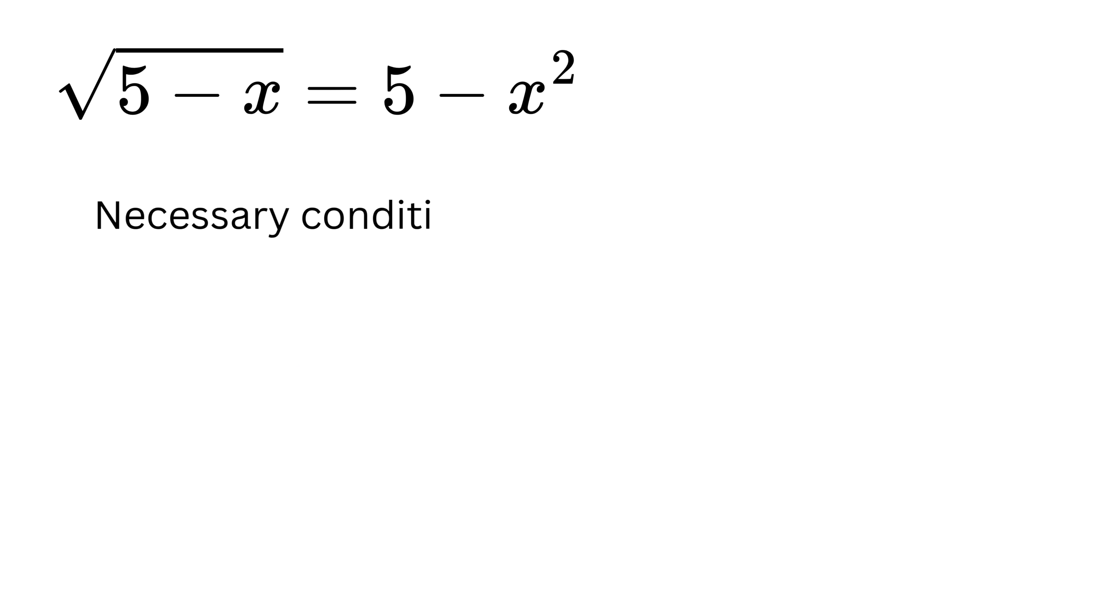First, let's establish the necessary conditions for the equation to be valid. The term inside the square root must be non-negative, and thus 5 minus x must be greater than or equal to 0, or x must be less than or equal to 5.